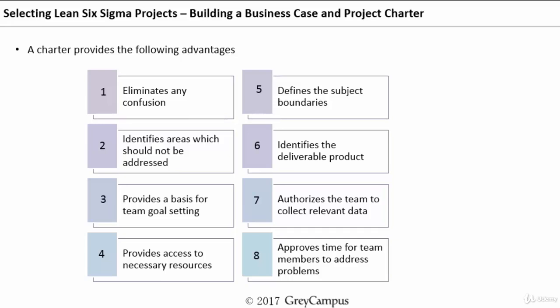The project charter also identifies all the deliverables. It authorizes the team to collect relevant data — since people in organizations are often reluctant to share data, and data is a critical requirement for any Six Sigma project, a formal project charter gives authority to the team to collect it. It also approves time for team members to address problems, ensuring that people engaged part-time in projects are released on time for project work.